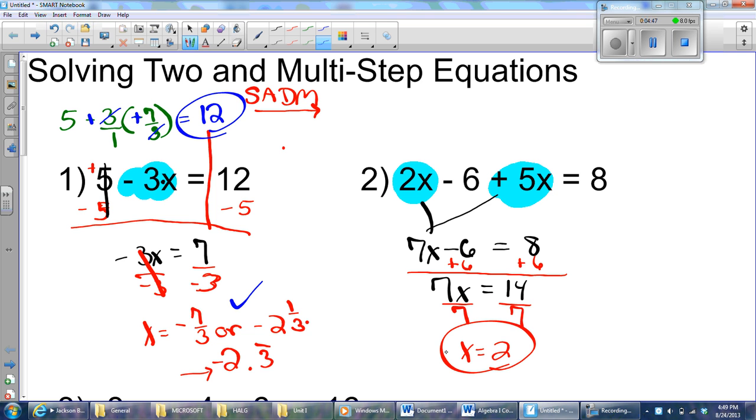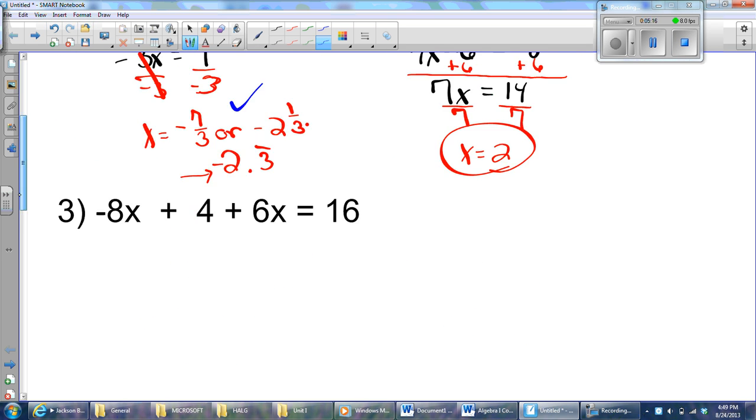On this one here, I know that x is 2. So, I'm going to have 2 times 2 minus 6 plus 5 times 2. Well, that's 4 minus 6 plus 10. That's negative 2 plus 10. And if I have 2 negatives, 10 positives, I must have 8 positives when it all comes out in the wash.